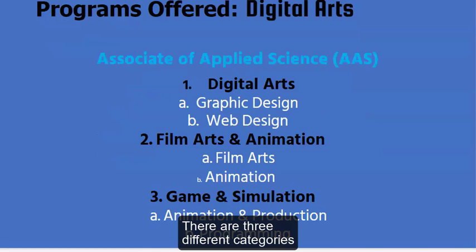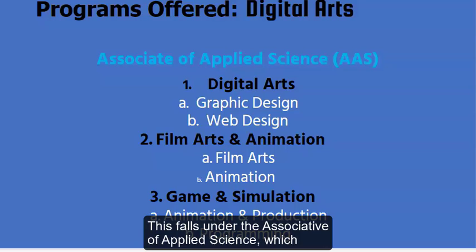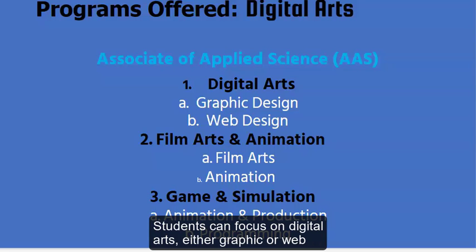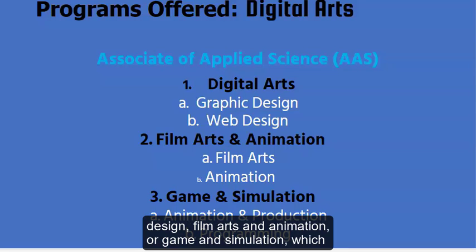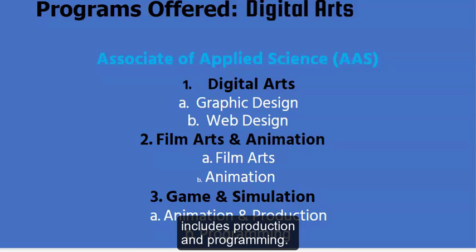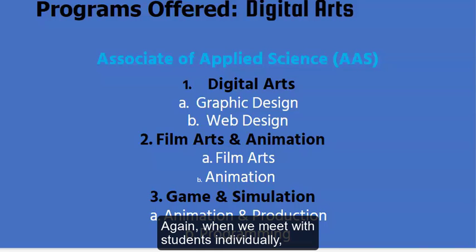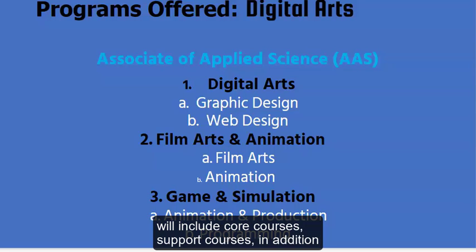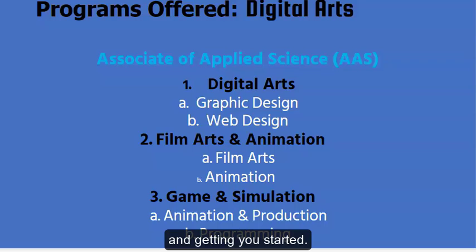There are three different categories under Digital Arts, which falls under the Associate of Applied Science — a direct employment degree. Students can focus on digital arts in graphic or web design, film arts and animation, or game and simulation, which includes production and programming. When we meet individually, we'll help you determine your semester pathway, including core and support courses, with a step-by-step process to get you started.